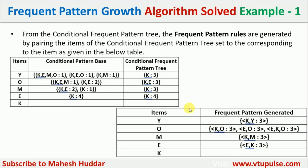The last step is to write association rules. For each frequent pattern, we write all possible rules. For example, for {K, Y}: the possible rules are K → Y and Y → K. We calculate the confidence for each rule and check whether it satisfies the minimum confidence threshold. If K → Y satisfies it, then K → Y is an association rule; similarly for Y → K. This process is repeated for all frequent patterns to generate the final association rules.